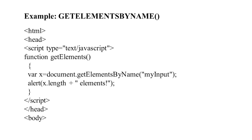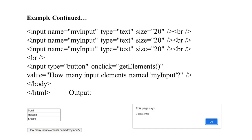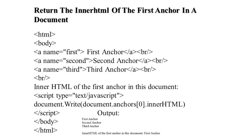For getElementsByName, we access elements by name. For example: x = document.getElementsByName('myInput'); x.length gives the count. There are three form text input boxes of size 20 characters. A button with an onclick event handler counts how many input elements exist. After entering three names, the output displays the count as three.